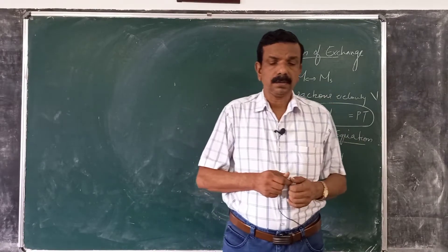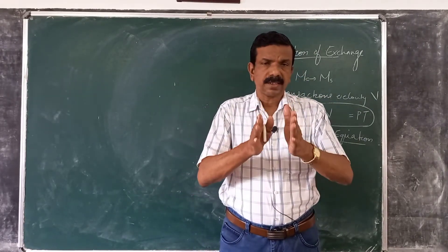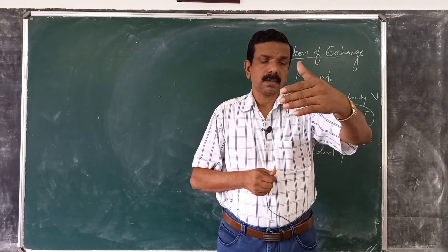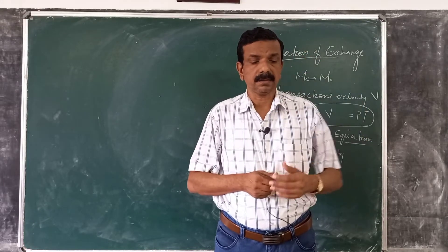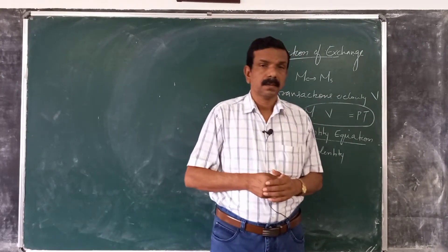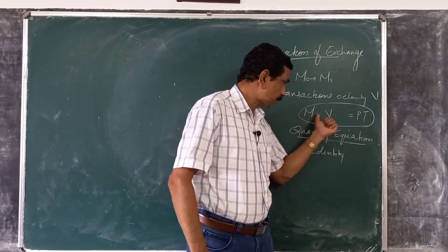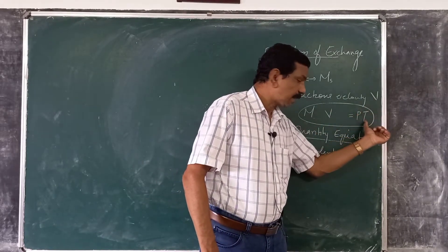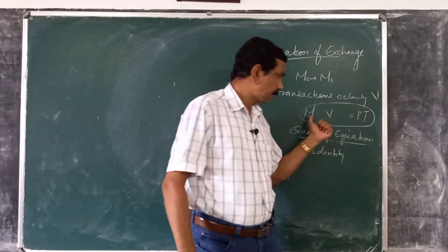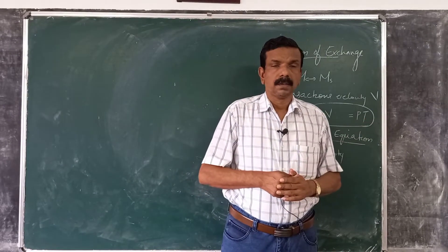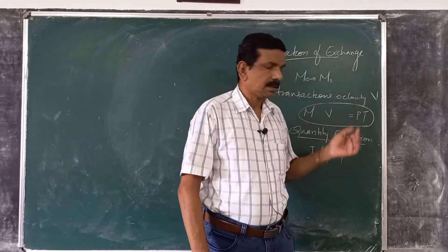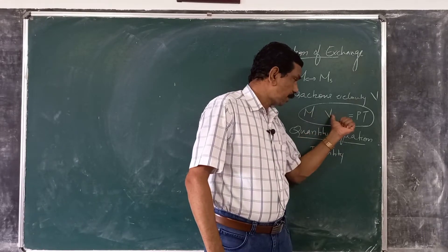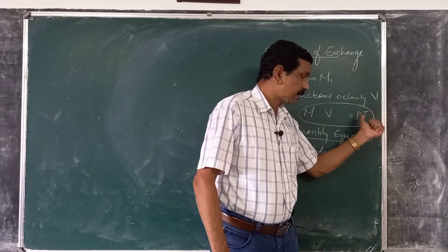This equation is useful because it shows that as one variable changes, one of the others must change to maintain the equality. For example, if money stock increases with V remaining unchanged, then either P or the number of transactions will change to maintain the equality. So MV = PT is an identity relating money multiplied by velocity to the volume of transactions at current prices.